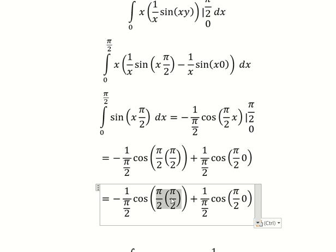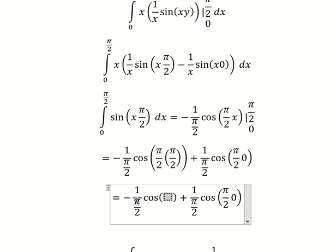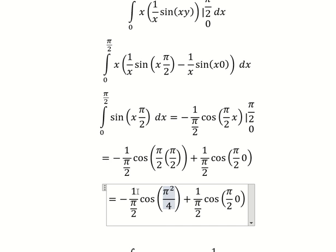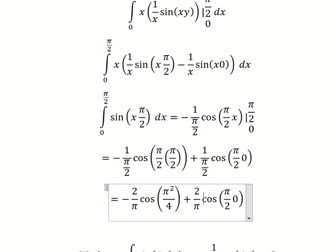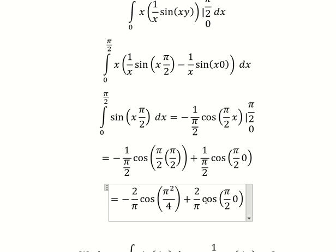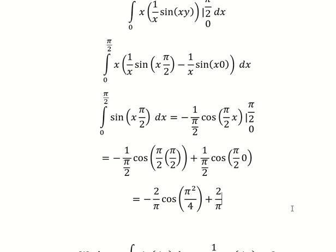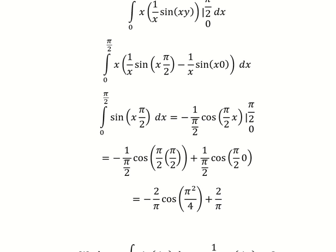This one we have π squared over four. This one we have two over π. Cosine of zero equals one. And this is the final answer. Thank you for watching.